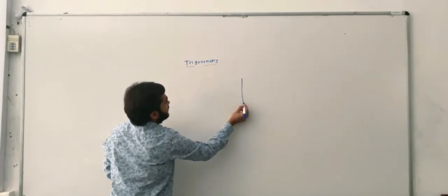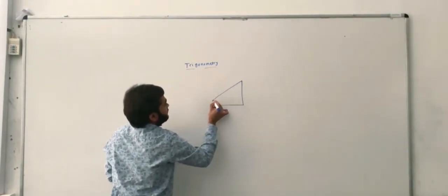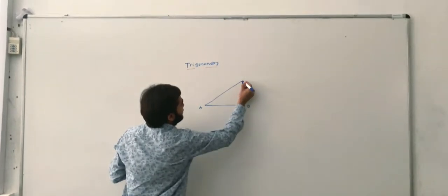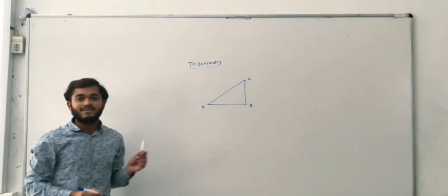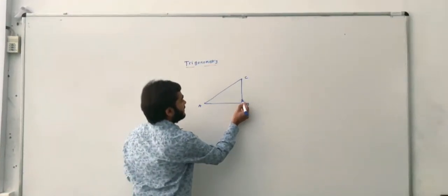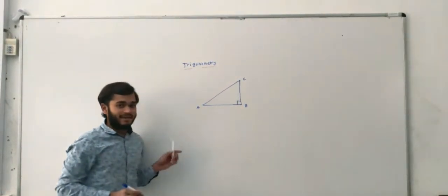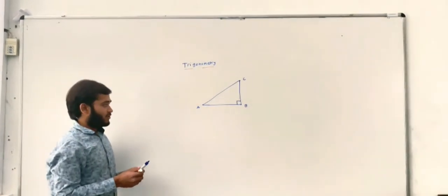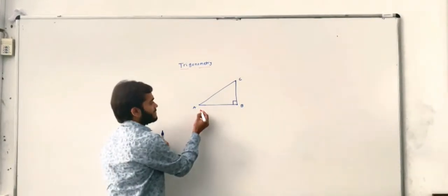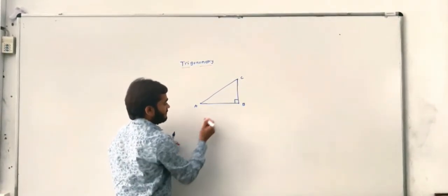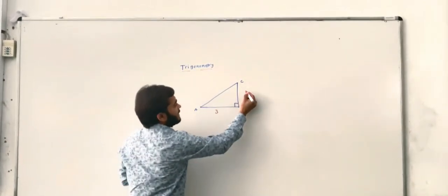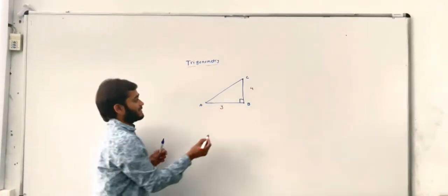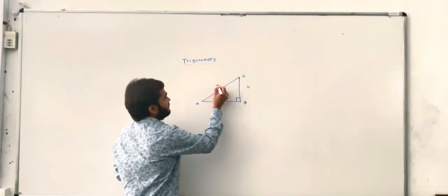Let us take the example of a triangle A, B, and C. This is called a right triangle because the angle at B is 90 degrees. So we can say that this is a right angle triangle. If the size of the AB side is 3 cm and the size of the BC side is 4 cm, then according to the Pythagoras theorem, the size of the AC side is 5 cm.